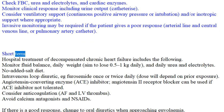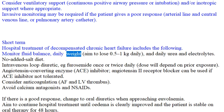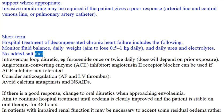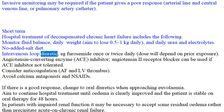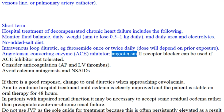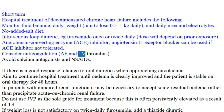Short-term hospital treatment of decompensated chronic heart failure includes: monitor fluid balance, daily weight (aim to lose 0.5–1 kg daily), and daily urea and electrolytes; no added salt diet; intravenous loop diuretic (e.g., furosemide once or twice daily); ACE inhibitor — angiotensin 2 receptor blocker can be used if ACE inhibitor not tolerated; consider anticoagulation for AF and LV thrombus.